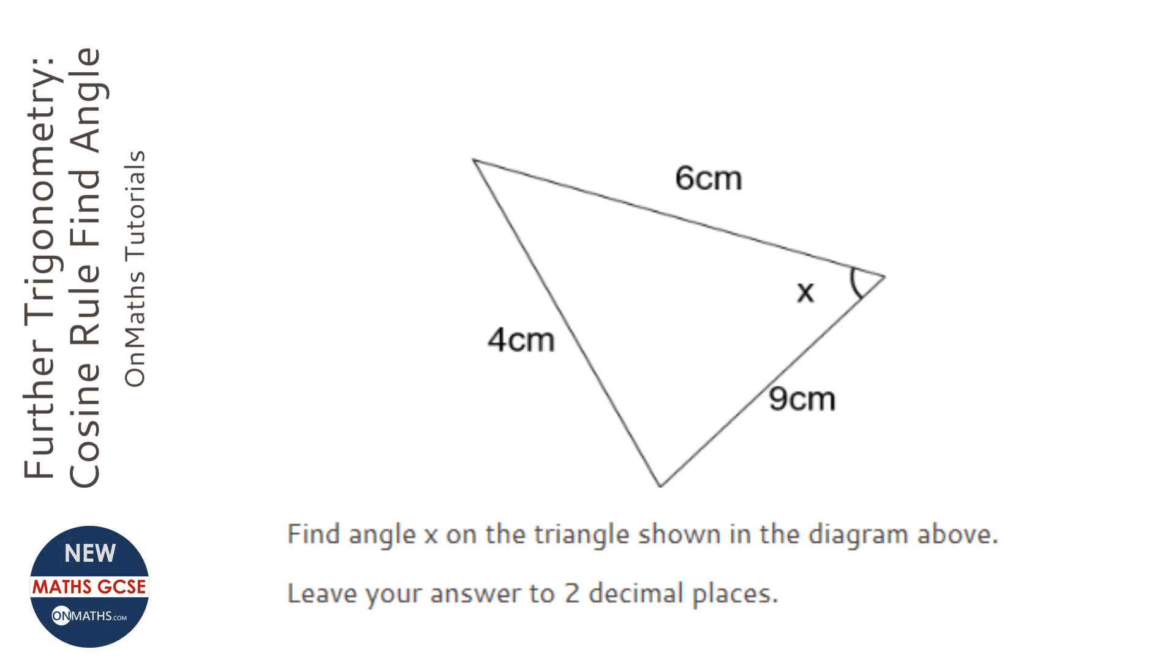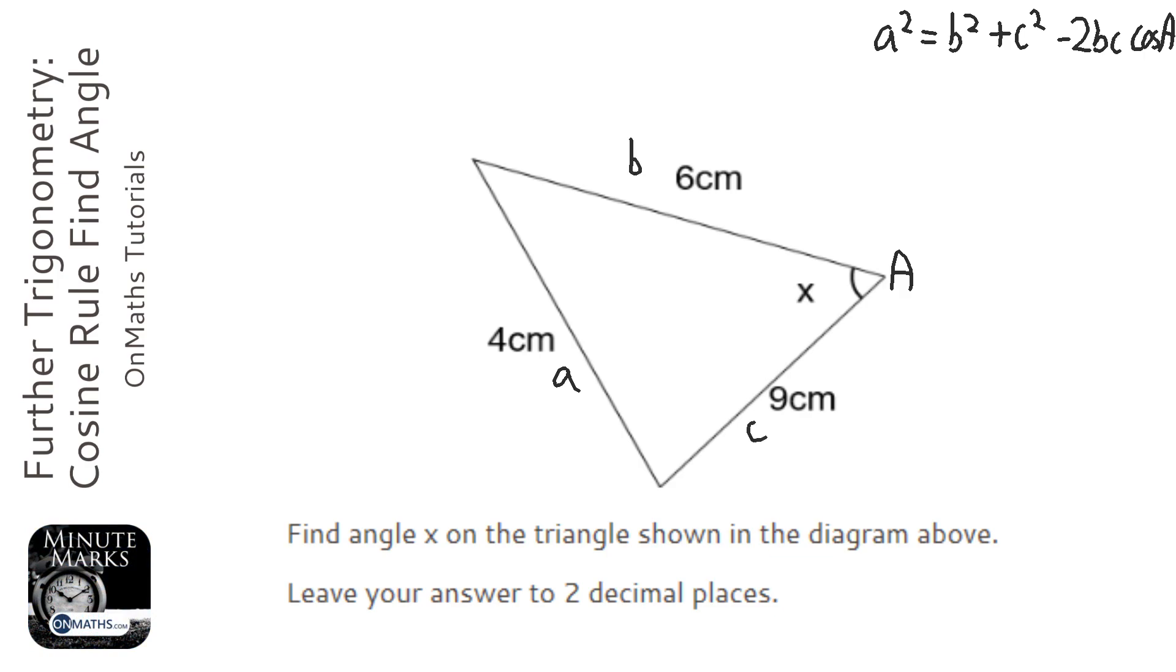Now the cosine rule is a squared equals b squared plus c squared minus 2bc cos A, and the angle A is the angle in the question, the length a is the one opposite the capital letter A. B and c, it doesn't matter which way around you put them.